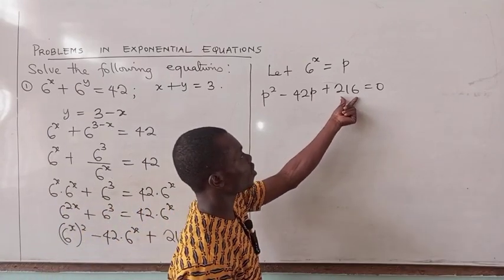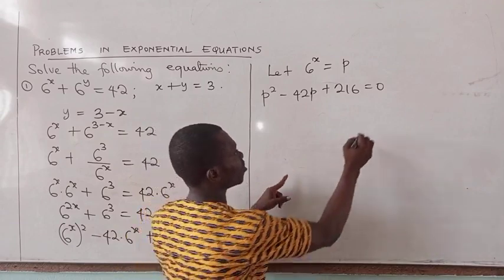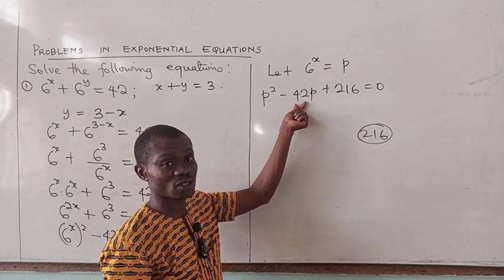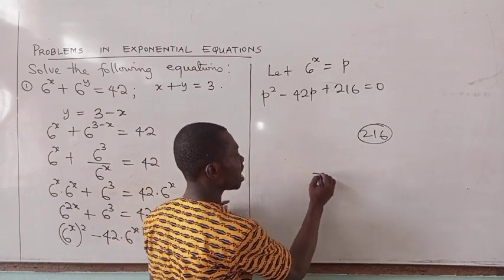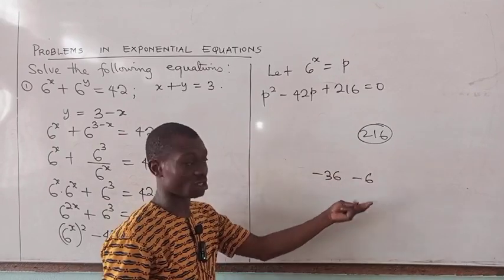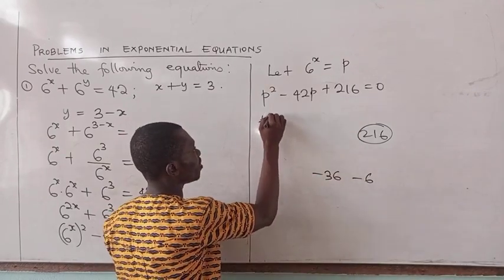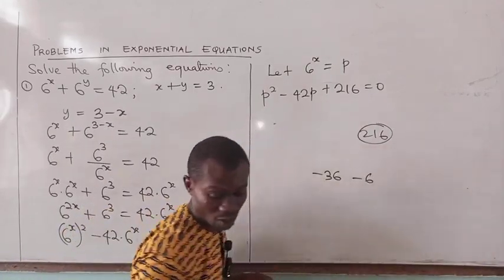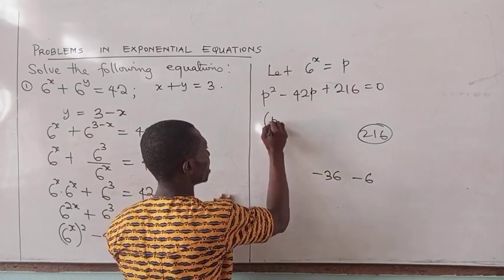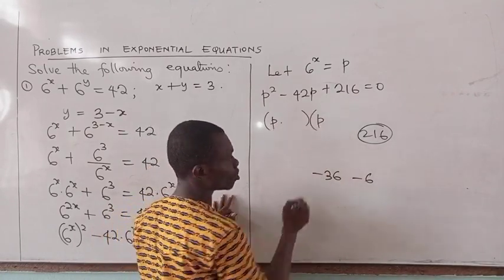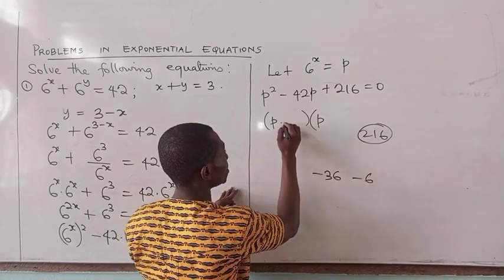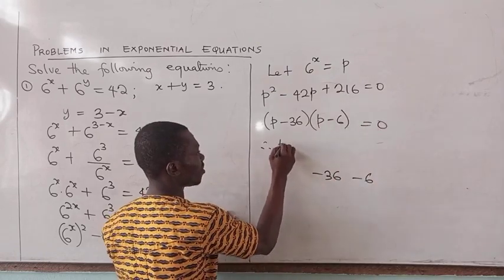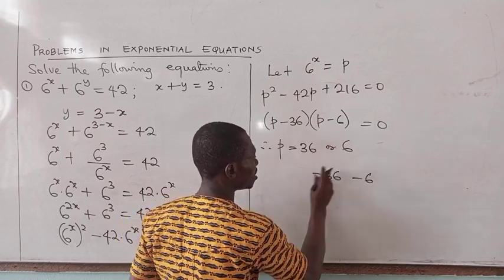The coefficient of p squared is 1, so we multiply 1 by 216 to get 216, and we need two factors of 216 that sum to minus 42. Those two factors are minus 36 and minus 6. Factoring: (p minus 36)(p minus 6) equals 0. Therefore p equals 36 or p equals 6.